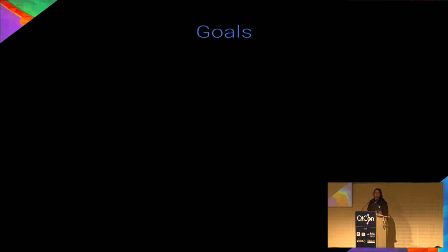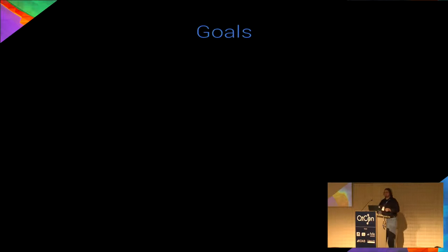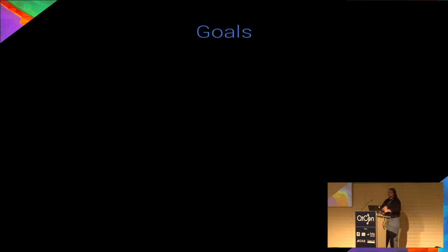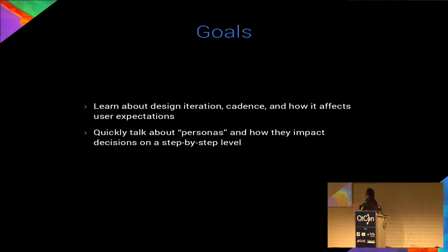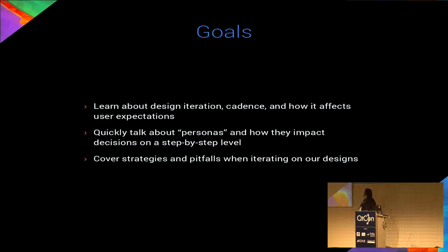Getting right into it — the goals of this talk. Normally with iterative design, you're talking about prototyping, testing, doing analysis, and then refinement. I'm not going to talk specifically about how to go through that process, because the methodology and resources we have available will vary. We have an incredibly diverse crowd here, from large companies to open source hackers. So instead, I'll be talking about iteration very literally: we have an application, we're going to change it, and we have practical things we can do to make those changes effective, not tick off our users, and go more smoothly. We're going to learn about iteration, cadence, and how it affects user expectations, and quickly talk about personas and how they affect decisions on a step-by-step level.